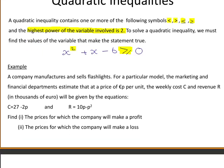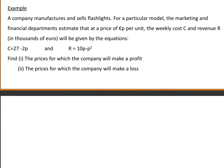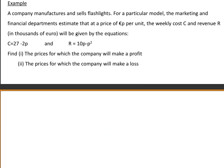Looking at this example, we are told that a company manufactures and sells flashlights. For a particular model, it has already been estimated that at a price of p euro per unit, the weekly cost c and revenue r in thousands of euro are given by the following equations.